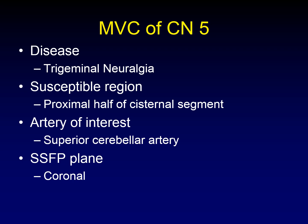The three nerves most commonly involved in microvascular compression: most commonly we're talking about cranial nerve five, where the disease is trigeminal neuralgia, or tic douloureux. The susceptible region of cranial nerve five is the proximal half of the cisternal segment. The cisternal segment runs from the root entry point to the porus trigeminus — the half closer to the brain stem is susceptible, the half closer to the porus is resistant.